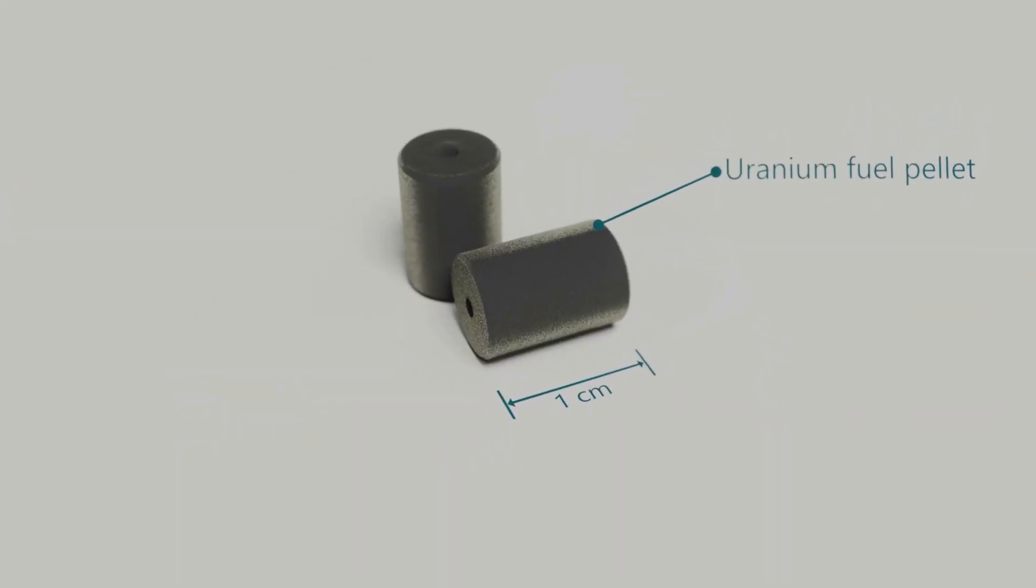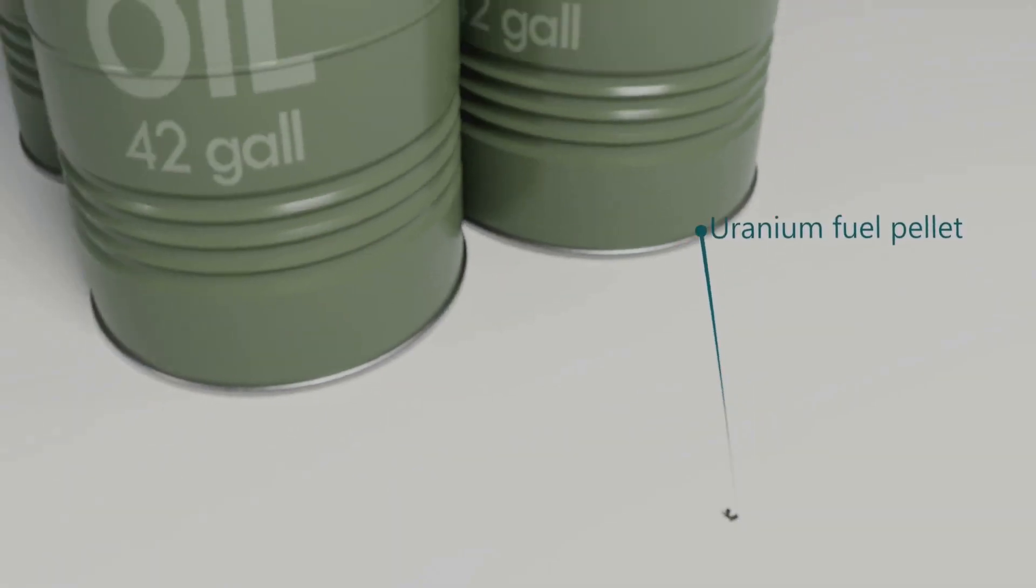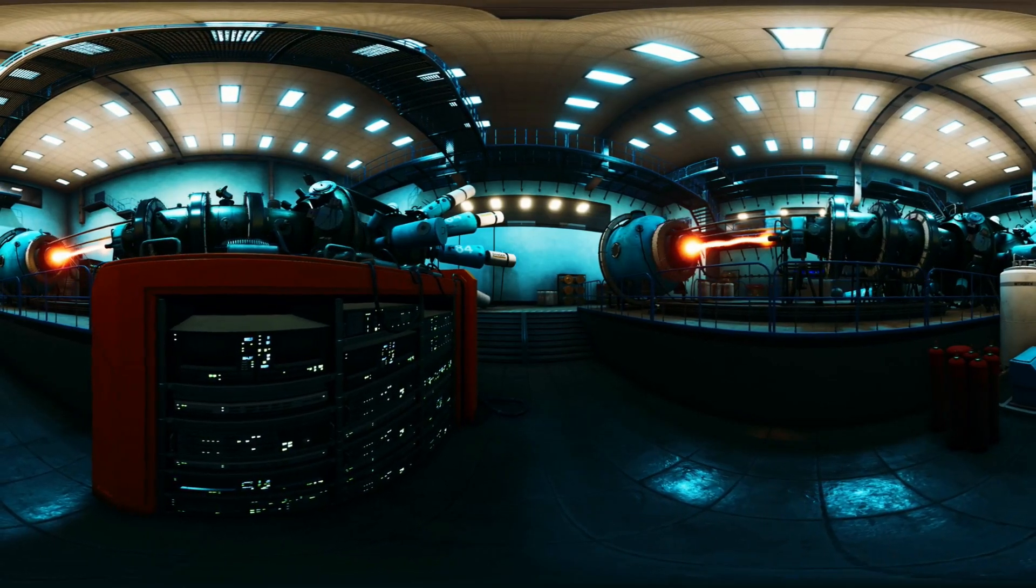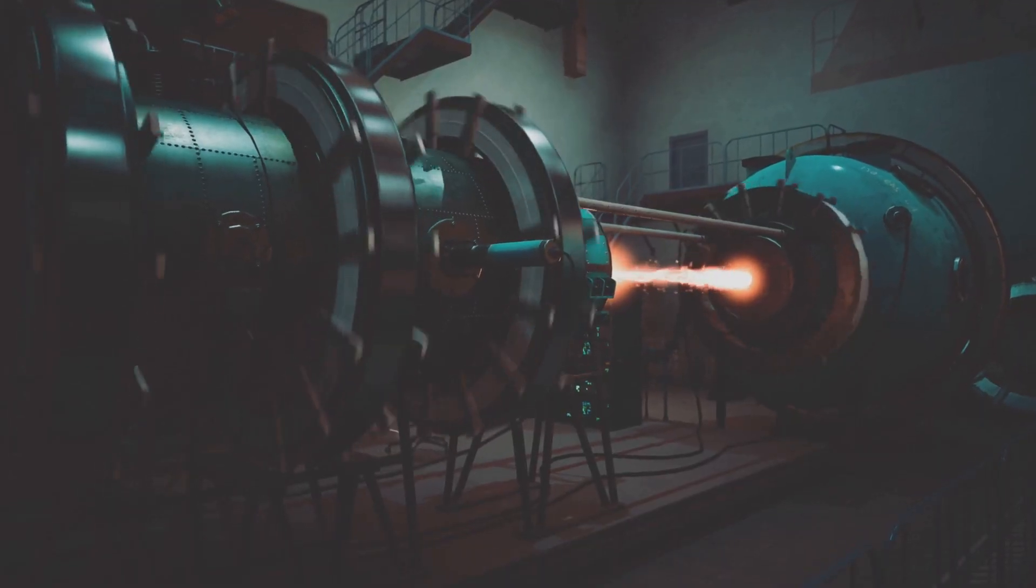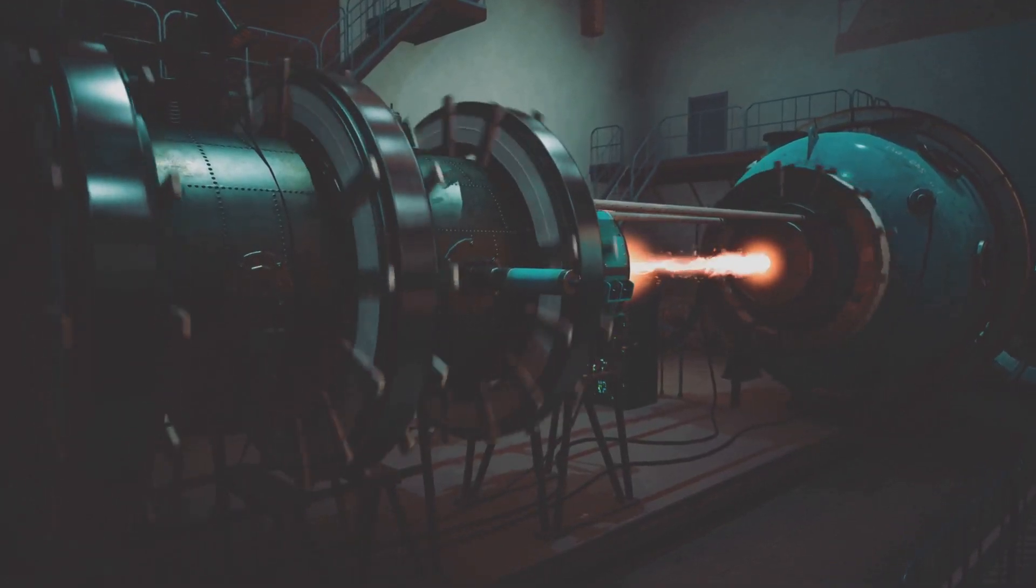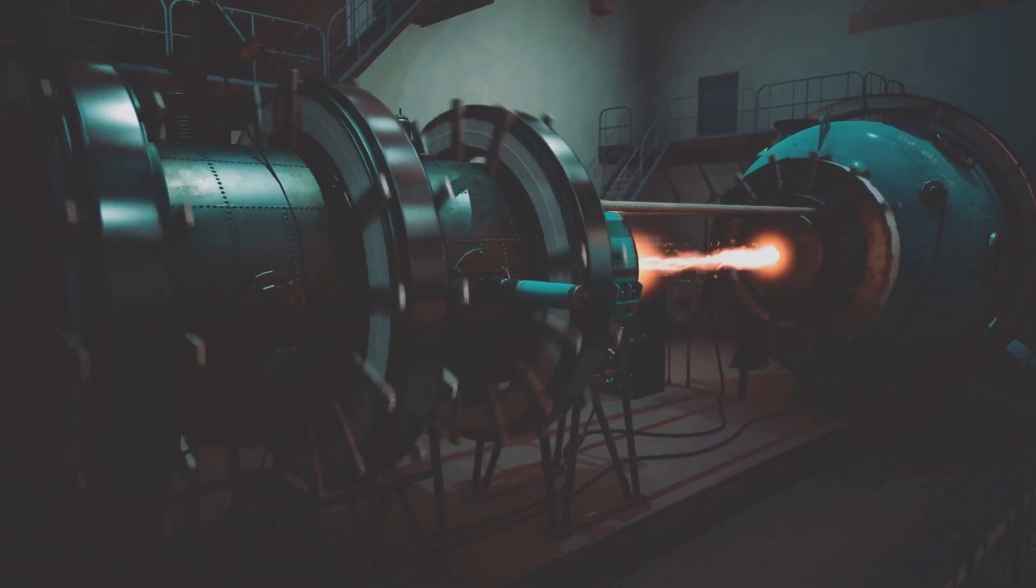This process starts with uranium, specifically the common isotope uranium-238. Inside a reactor, a U-238 atom can absorb a stray neutron. This simple act sets off a chain of events that transforms the uranium atom step-by-step into a shiny new atom of plutonium-239. It's modern-day alchemy all powered by nuclear physics.